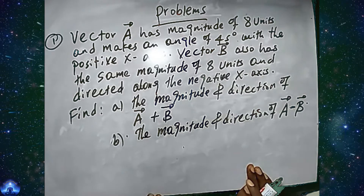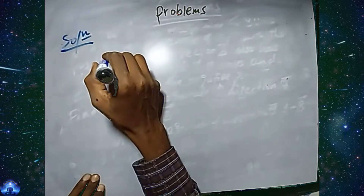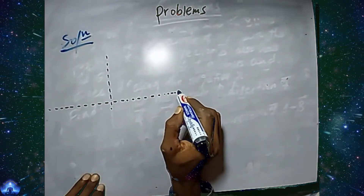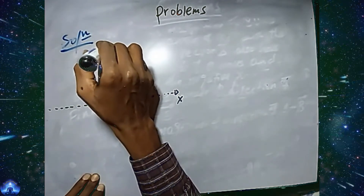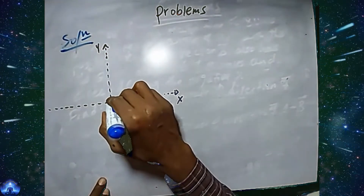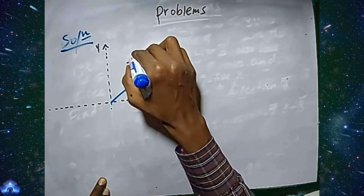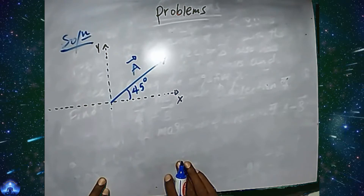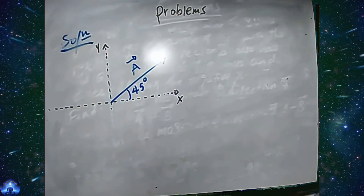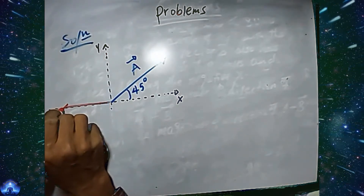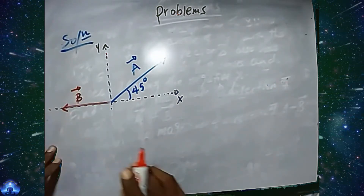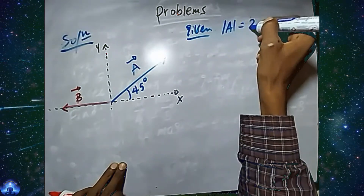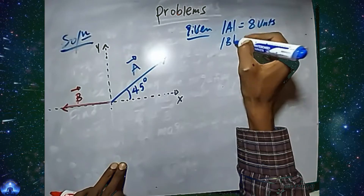Consider a two-dimensional coordinate system with x and y axes. Vector A has a magnitude of 8 units and makes an angle of 45 degrees to the positive x-axis. Vector B has the same magnitude directed along the negative x-axis. Given: the magnitude of A equals 8 units, and the magnitude of B equals 8 units.